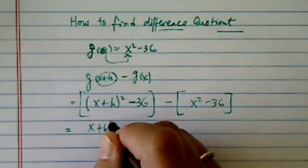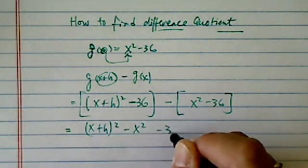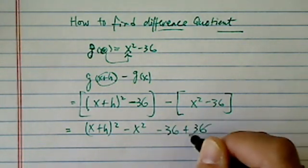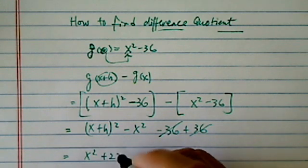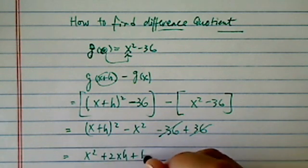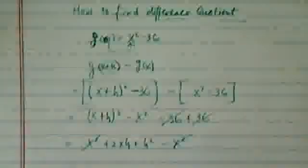x plus h squared minus x squared minus 36 plus 36. It cancels out. And then this one is x squared plus 2xh plus h squared minus x squared. Cancel this one out.